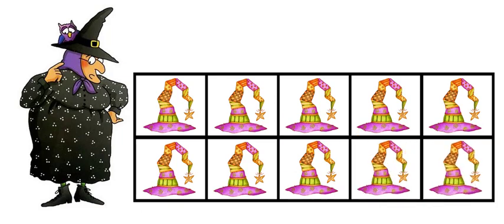How many hats does Mildred have now? One, two, three, four, five, six, seven, eight, nine, ten. Every single square is filled. There are ten hats, and this is a tens frame.